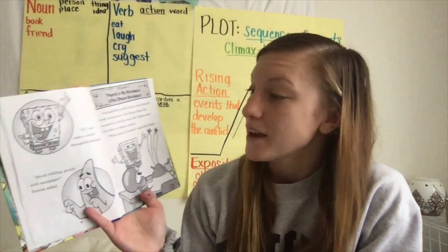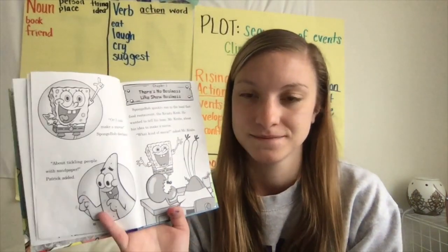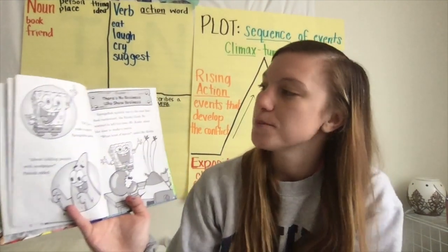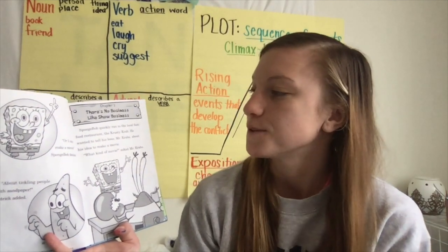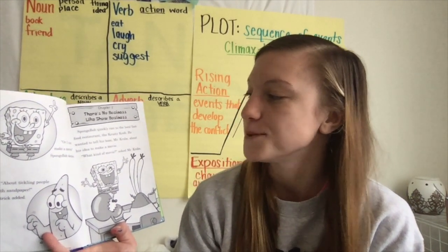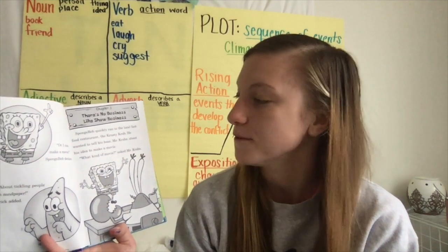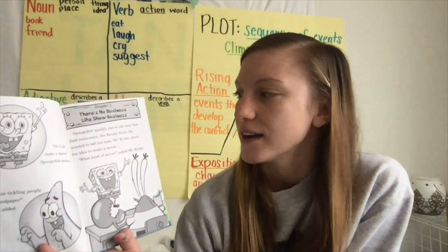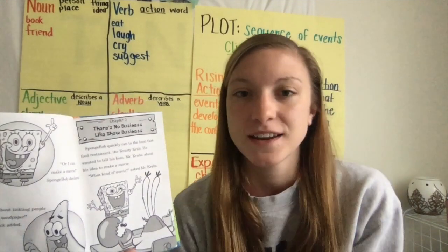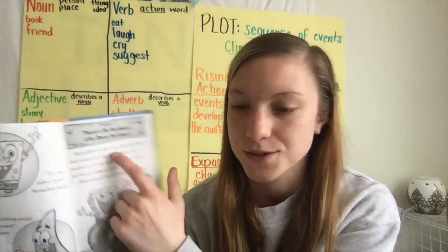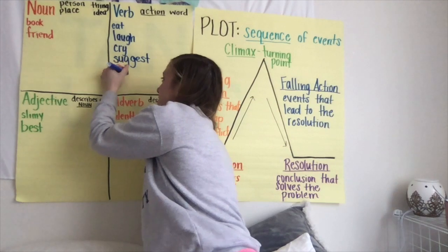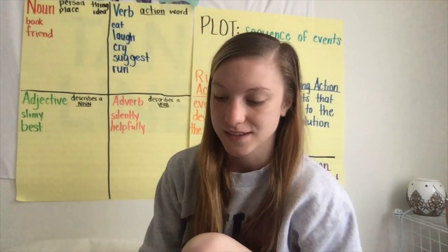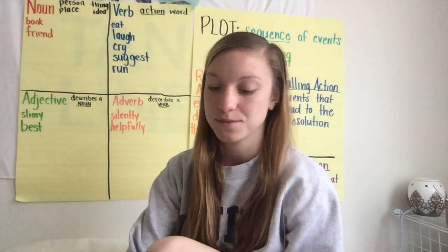'Or I can make a movie,' SpongeBob declared — 'about tickling people with sandpaper,' Patrick added. Chapter two: There's No Business Like Show Business. SpongeBob quickly ran to the local fast food restaurant, the Krusty Krab. He wanted to tell his boss Mr. Krabs about his idea to make a movie. 'What kind of movie?' asked Mr. Krabs. So I hear another verb: SpongeBob ran to the local fast food restaurant. And it described how he ran — it said he ran quickly. So 'quickly' is going to be our adverb.